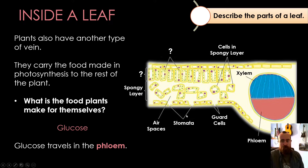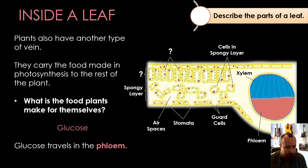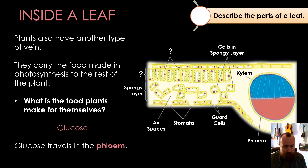Xylem and phloem are weird words, and it can be difficult to remember which one transports which. The way to remember: phloem carries the food from photosynthesis. So there are lots of 'ph' and 'f' sounds — phloem, food, photosynthesis. All those F sounds are associated with the phloem. That's the best way to remember it.